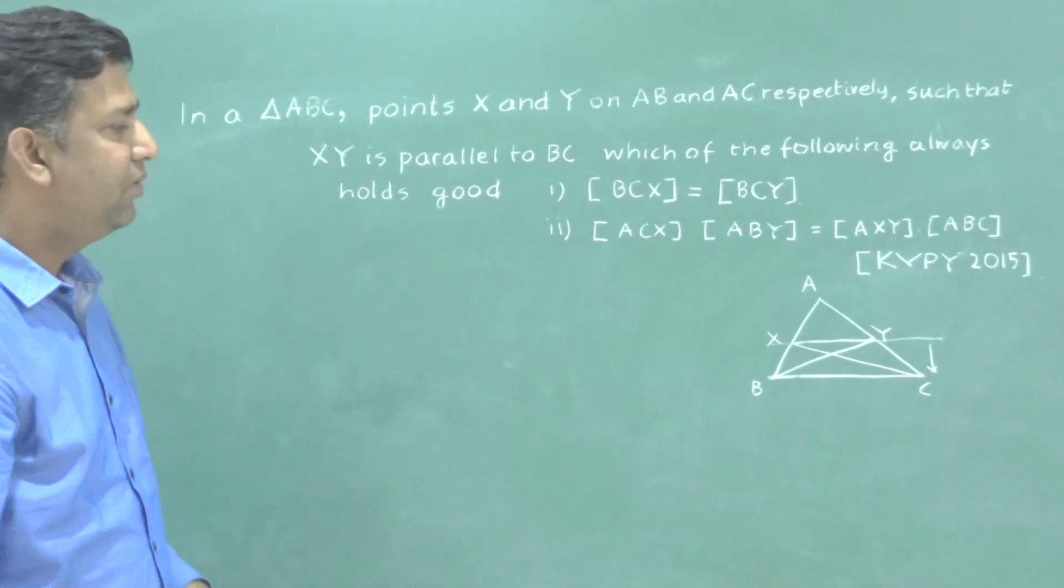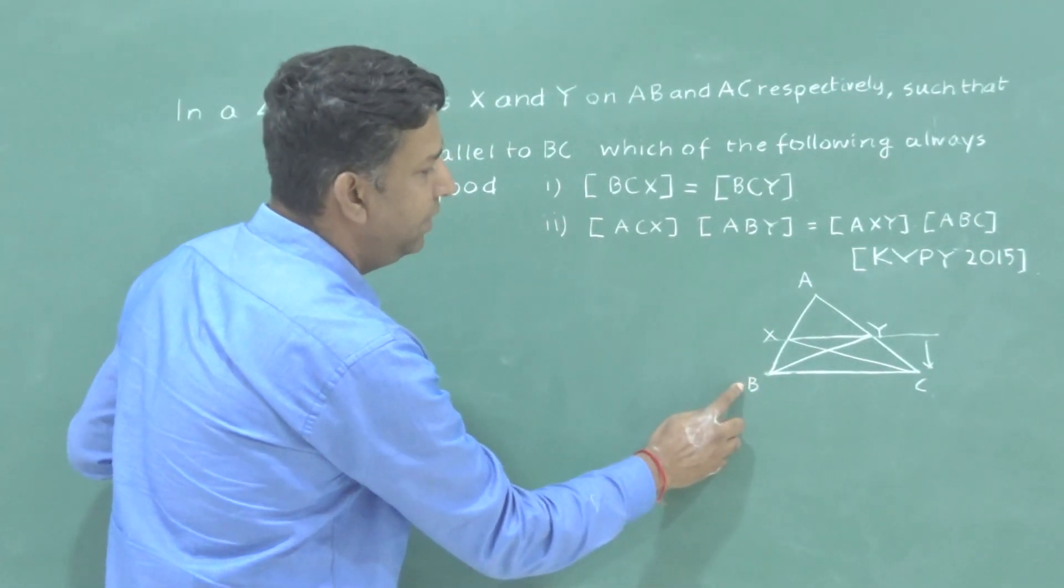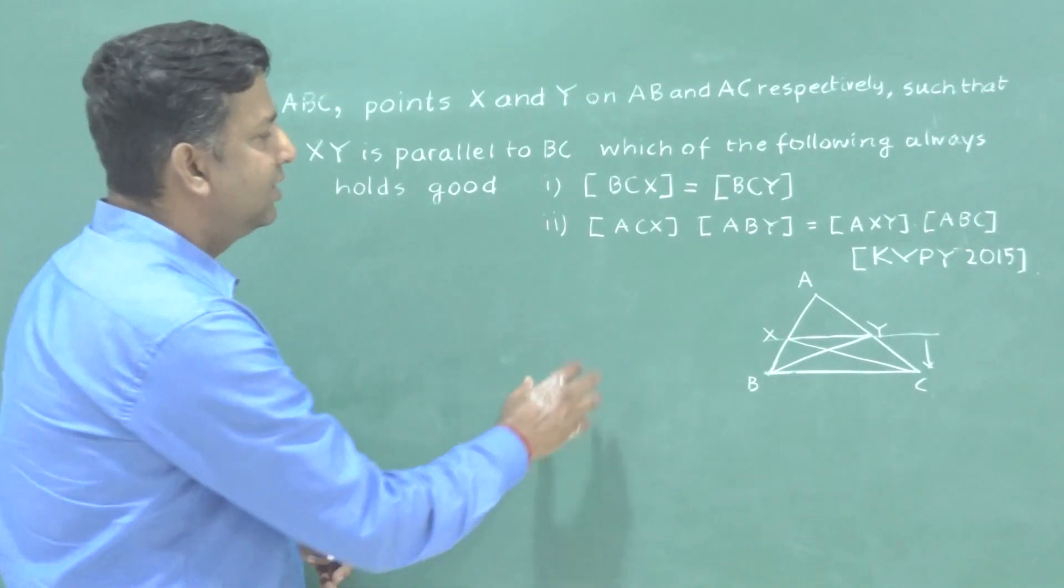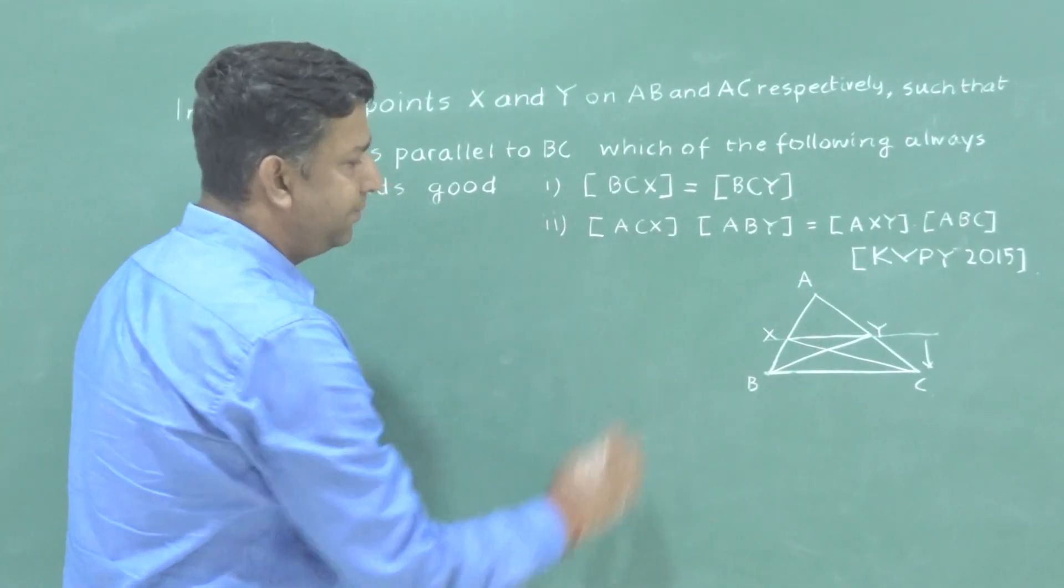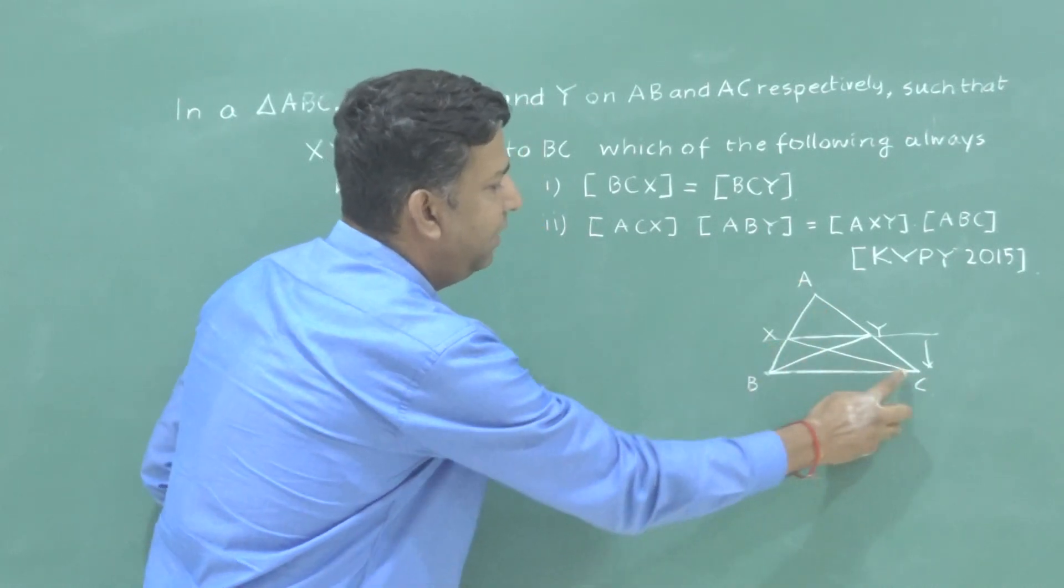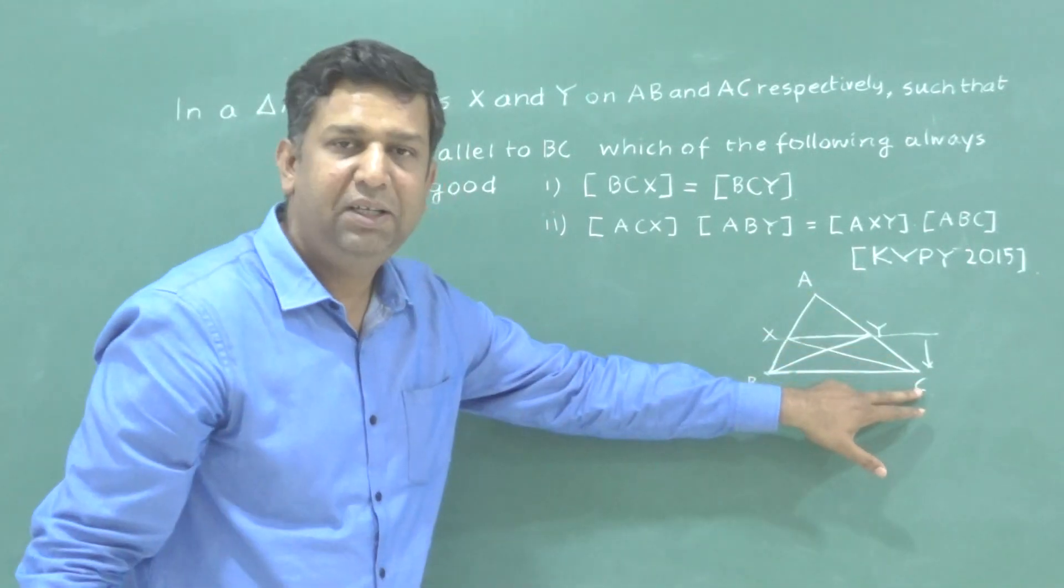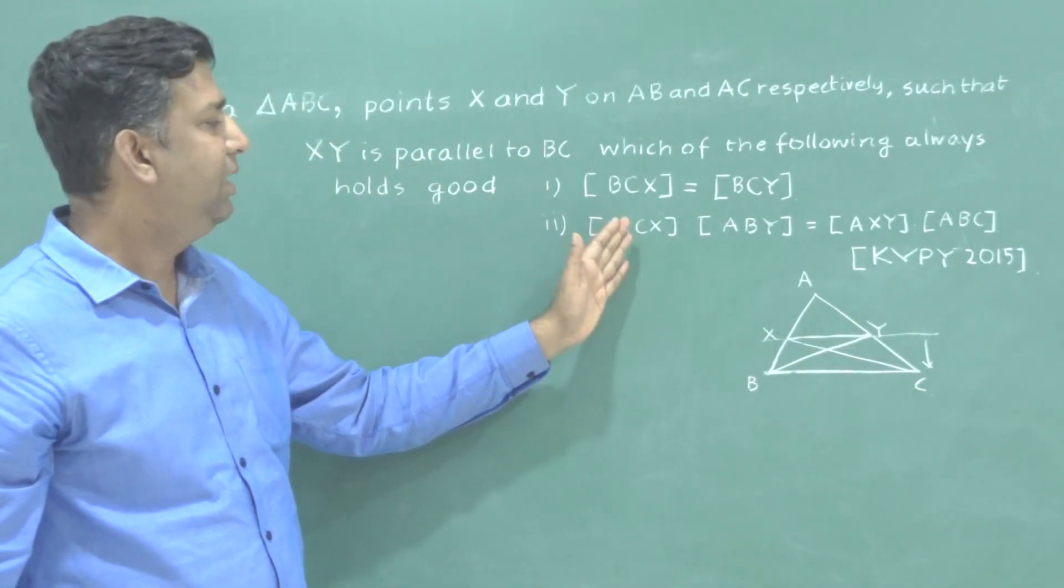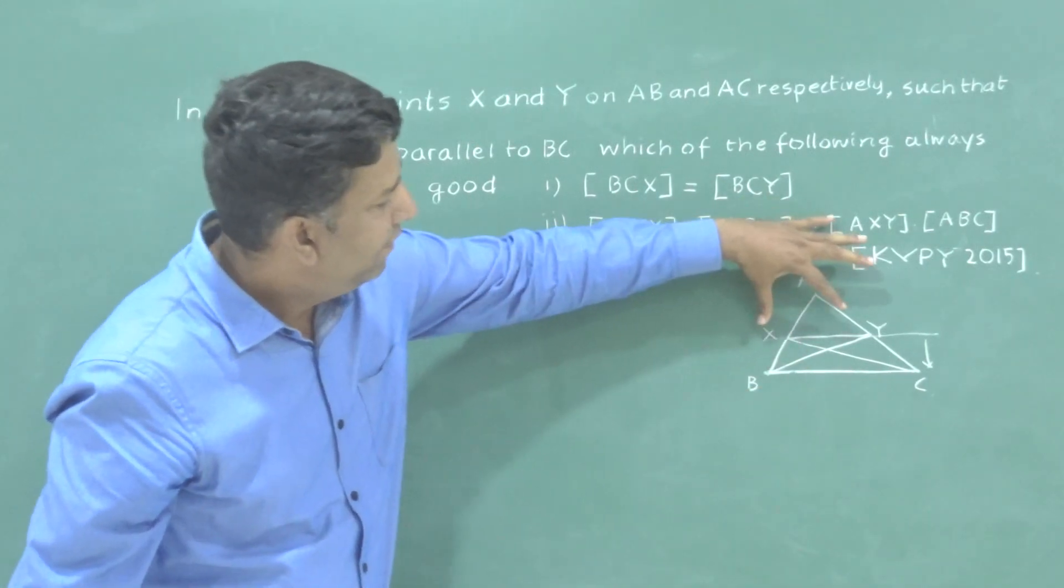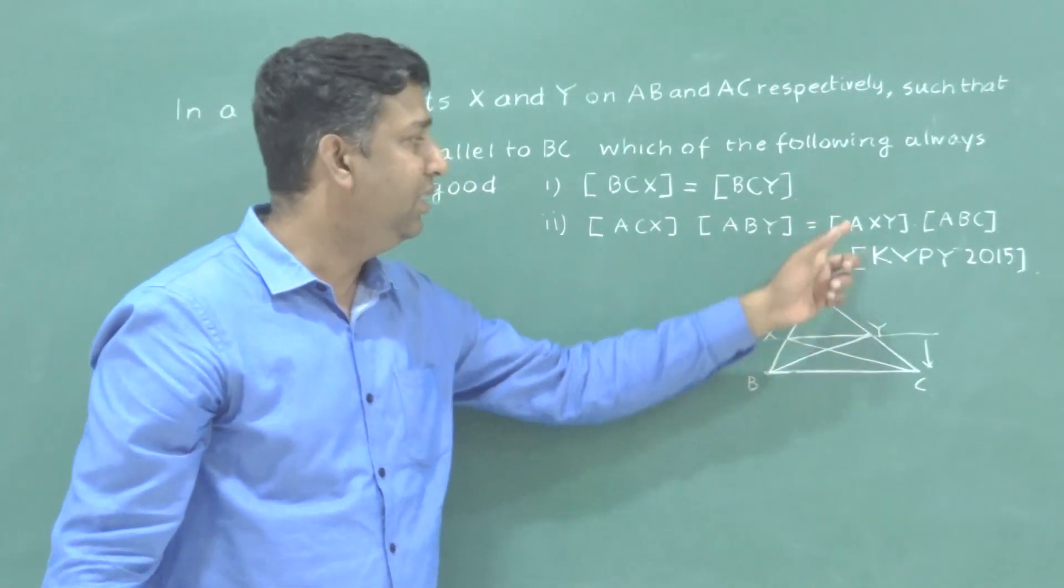So in that case, what will happen, if you check out, this X will coincide with B and the Y will coincide with C. So in that case, ACX will become ABC. Again, ABY will also become ABC. So left hand side will be ABC into ABC. What about AXY? When X and Y both go and coincide with BC, will become ABC.